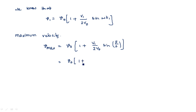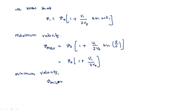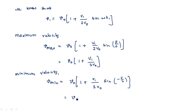That equals v0 into (1 plus V1 by 2V0), since sin(pi by 2) is 1. This gives maximum velocity. For minimum velocity, v_min equals v0 into (1 plus V1 by 2V0 times sin(minus pi by 2)), which becomes v0 into (1 minus V1 by 2V0). Maximum velocity refers to the late electron and minimum velocity to the early electron.